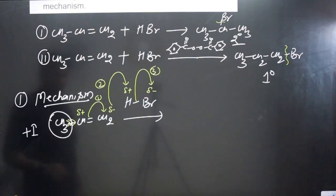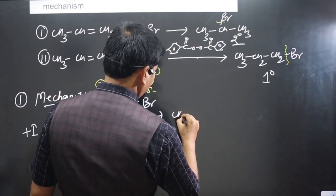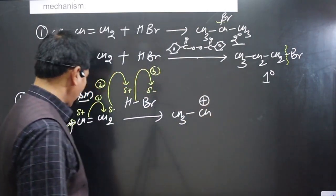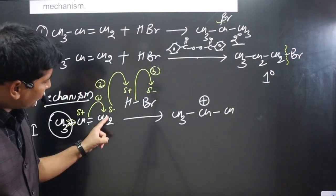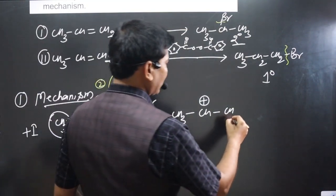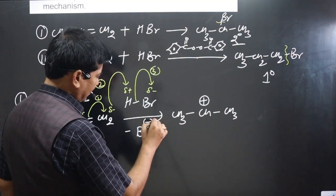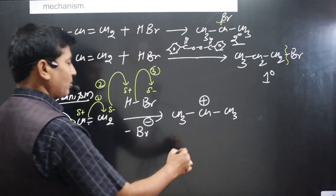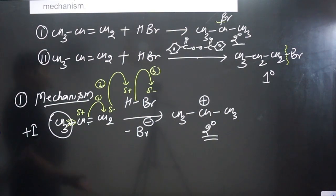In the next step, the double bond converts to a single bond. CH3-CH(+)-CH2 is formed: the terminal CH2 picks up the hydrogen to become CH3, and Br⁻ is liberated. So we obtain a secondary carbocation — CH3-CH(+)-CH3 — which is more stable than a primary carbocation.